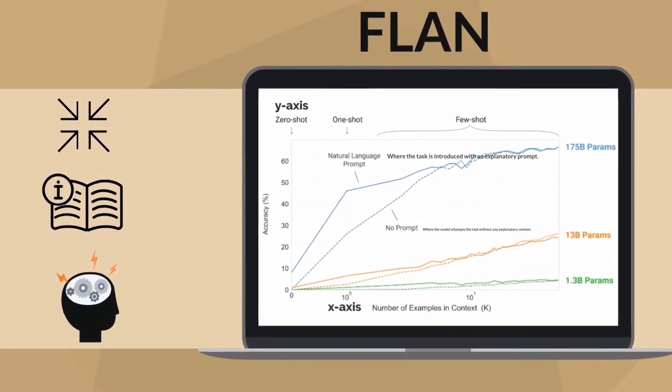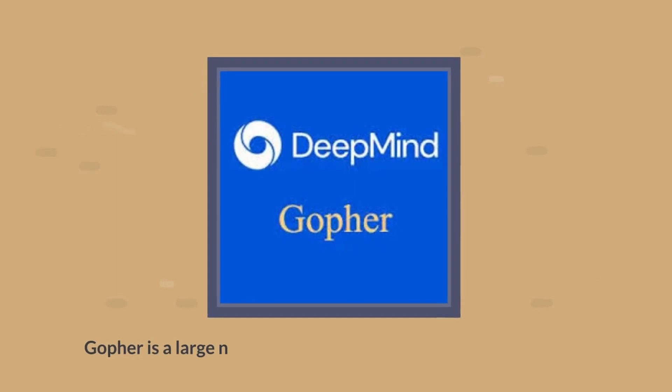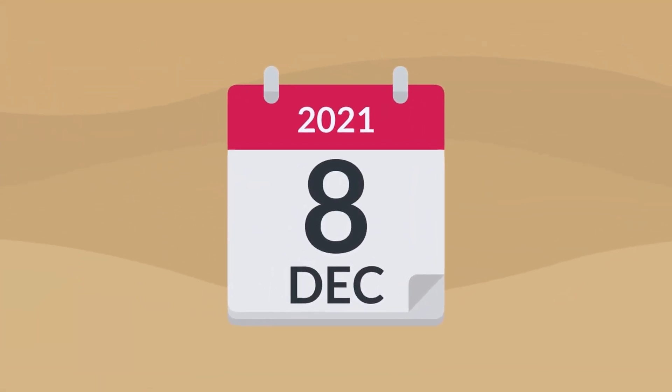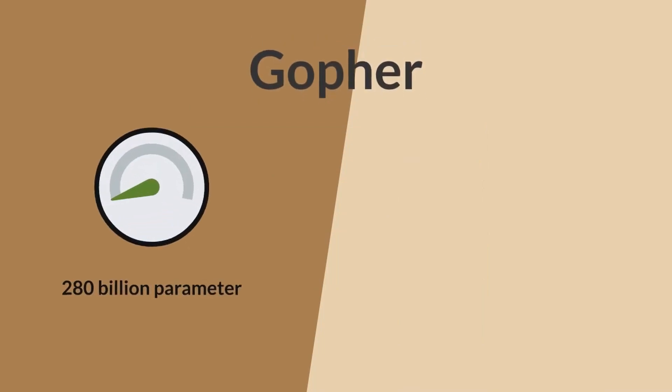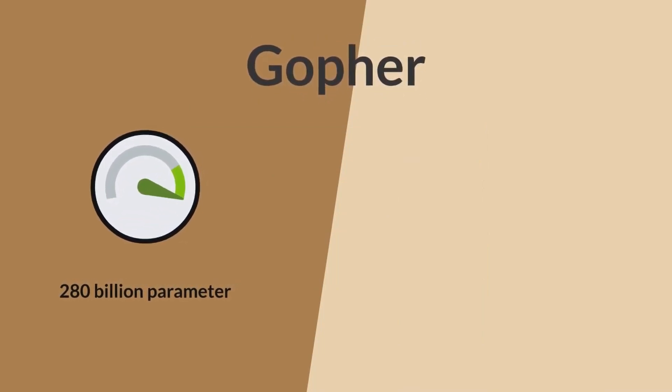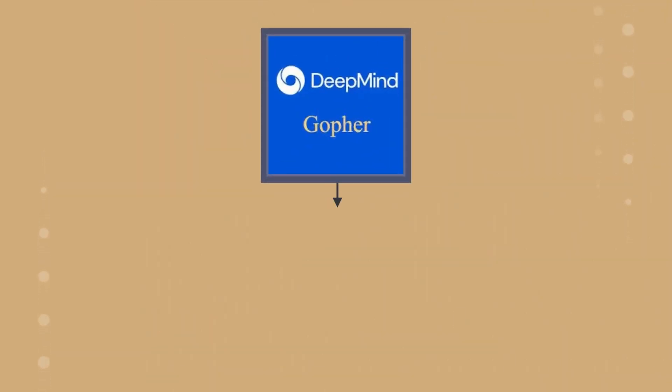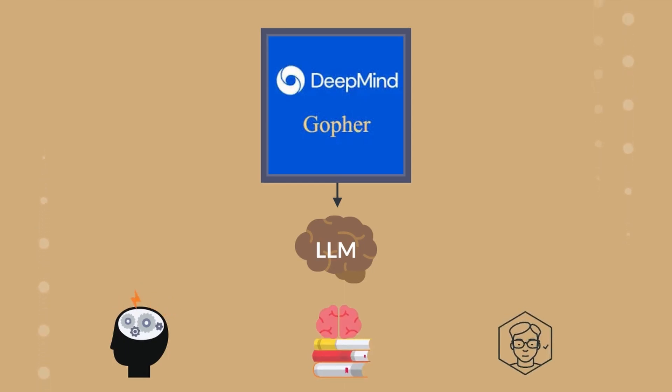Gopher is a large natural language model developed by DeepMind and released on December 8, 2021. During training, Gopher utilized 280 billion parameters, surpassing its main competitor, GPT-3. DeepMind claims that Gopher outperformed the existing large language models at the time in many tasks, especially in answering questions related to logic reasoning and humanities subjects, with answers approaching human-level accuracy.